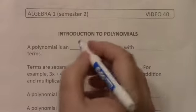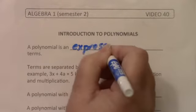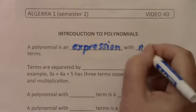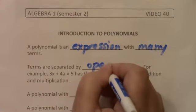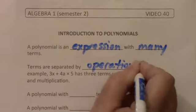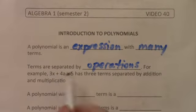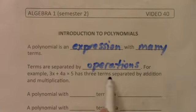A polynomial is an expression with many terms. Terms are separated by operations. For example, 3x plus 4a times 5 has three terms separated by addition and multiplication.